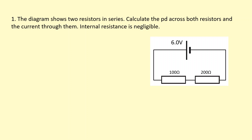The diagram shows two resistors in a series. Calculate the potential difference across both resistors and the current through them. The internal resistance is negligible. There are many ways to do this. I'm going to start off by using the total resistance method. Because these two are in series, I just add up the total resistance, which is 300 ohms.